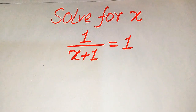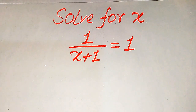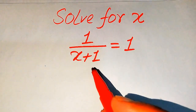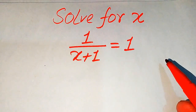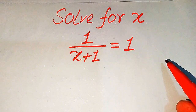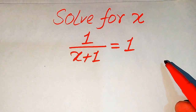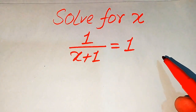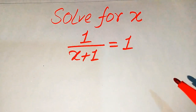Hello everyone. How to solve this problem for the values of x if we have 1 over x plus 1 is equals to 1. We solve this problem for all the values of x. Here, first we find all the roots of this equation, and at the last we will verify which of the roots are solutions of the given equation and which of the roots are extraneous roots.